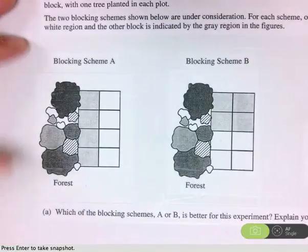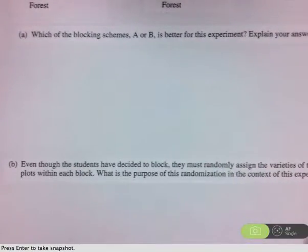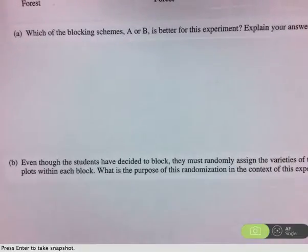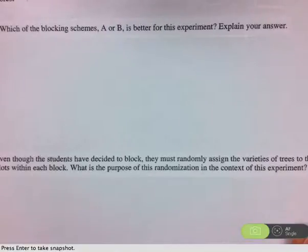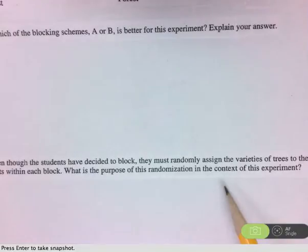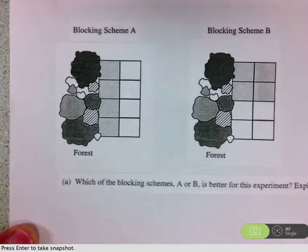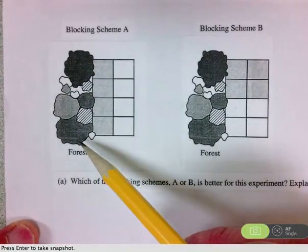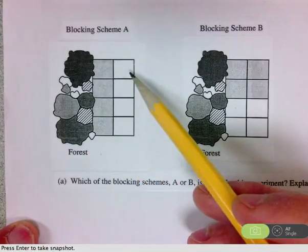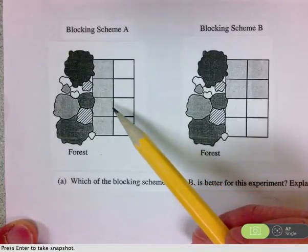So to answer part B of the question, even though students have decided to block, they must randomly assign the varieties of trees to the plots within each block. What is the purpose of this randomization in the context of this experiment? Well, something to think about, there is going to be random variability from plot to plot that isn't explained by the forest. So for instance, maybe there is an underground stream that runs through some of these plots. So it may just be that whether they're against the forest or not, there may be some plots where maybe there is more water available.